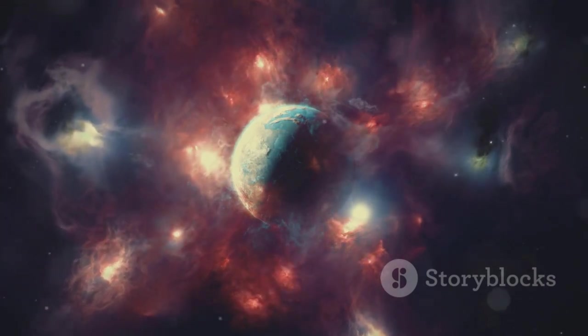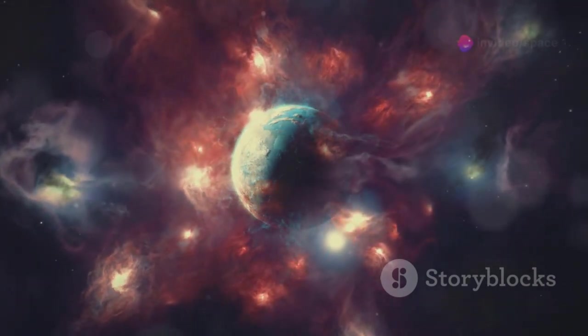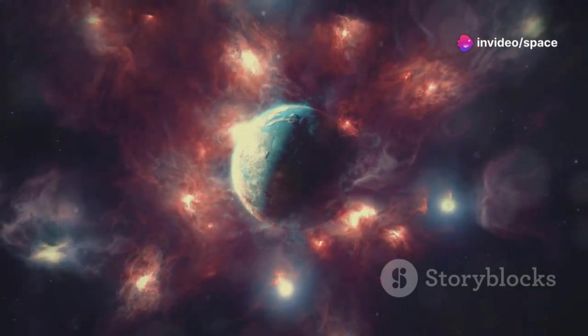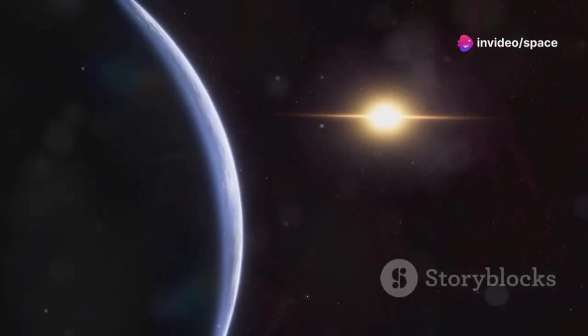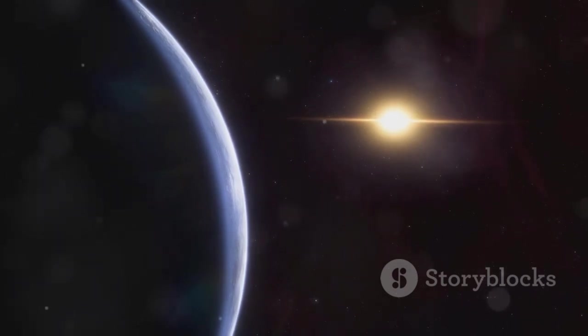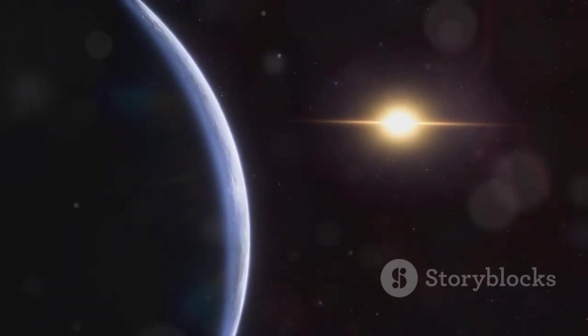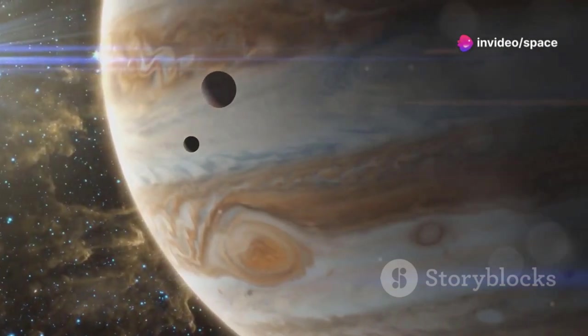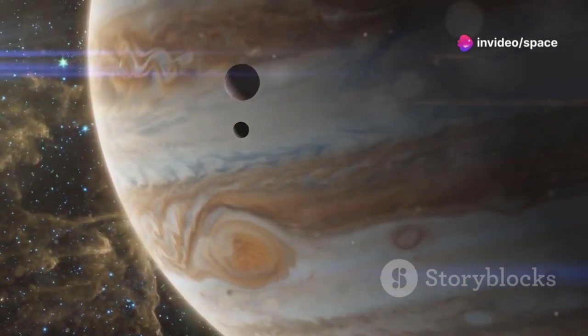Some researchers propose that these rogue planets might have initially formed around a star, similar to the planets in our solar system. But rather than settling into stable orbits, they were flung into interstellar space by gravitational interactions with other planets or passing stars. This ejection, though violent, could have maintained their binary connection, sending them on their solitary journey together.